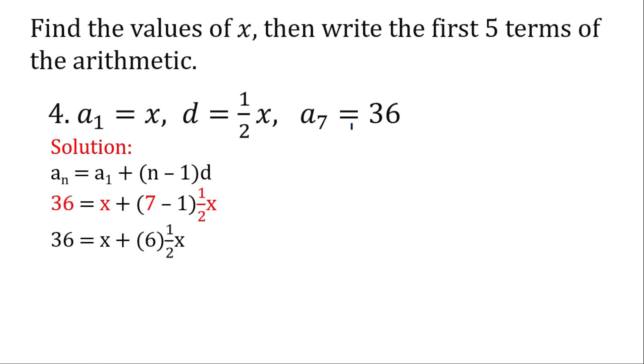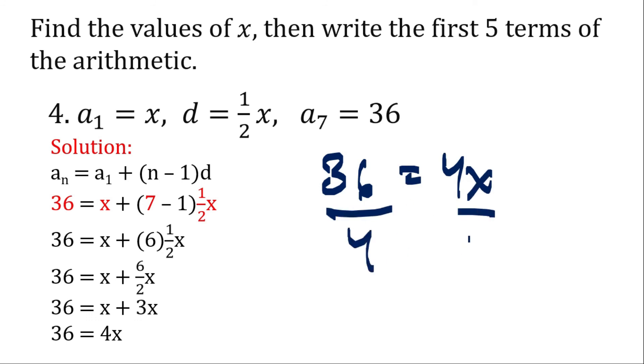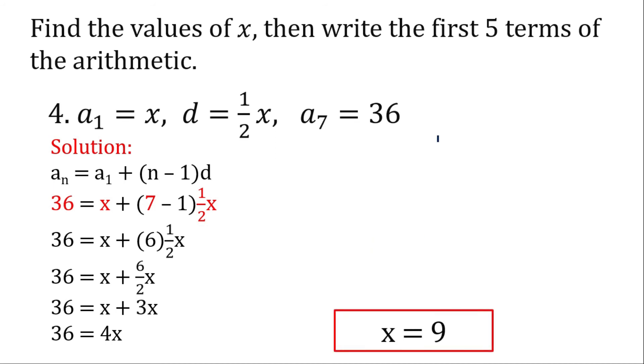Now 7 minus 1 is 6. 6 times 1 half is equal to 6 over 2, that would be 3x. Now x plus 3x is 4x. Now 36 is equal to 4x. Now let's divide both sides by 4. Cancel that, and now we get the value of 9. 9 times 4 is 36, so that's the value of our x.